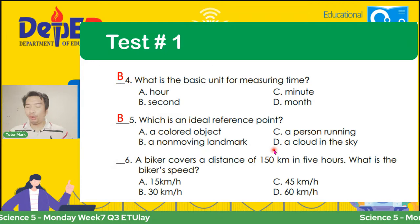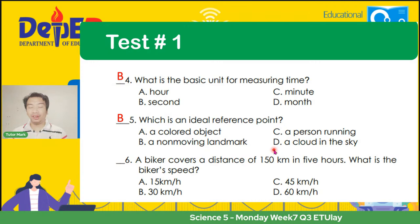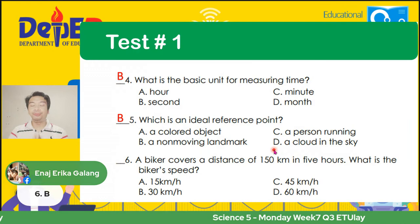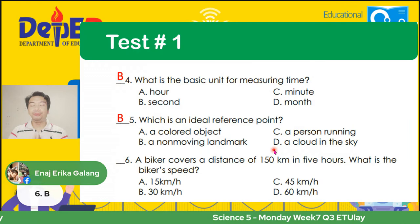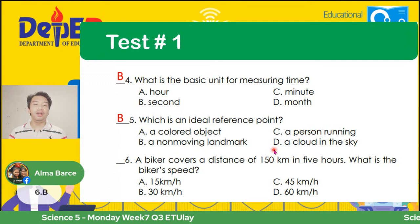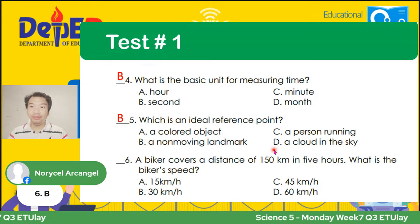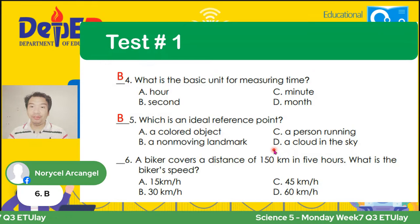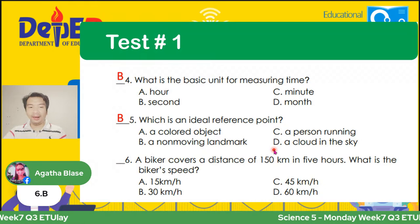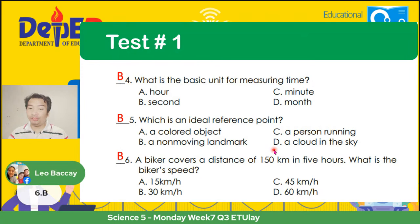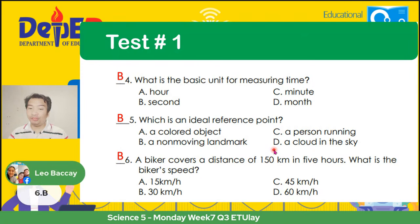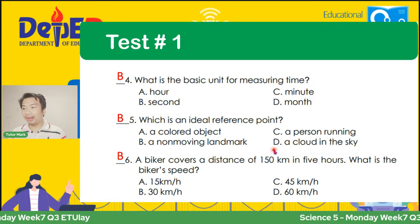Item number 6 na tayo na kailangan ninyong i-compute. A biker covers a distance of 150 kilometers in 5 hours. What is the biker's speed? A — 15 km/h; B — 30 km/h; C — 45 km/h; D — 60 km/h. Tandaan, ang formula natin sa speed ay S equals D divided by T, distance divided by time. According to Ena Erika Galang, letter B, correct. Dahil kapag dinivide natin ang 150 sa 5, ang lalabas sa sagot ay 30. Kaya sa mga sumagot ng 30 kilometers per hour, you got it right.